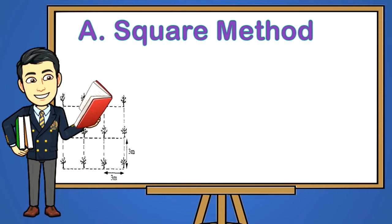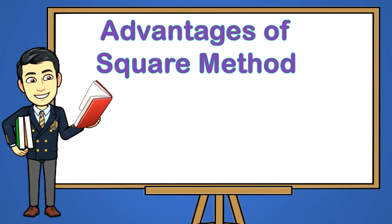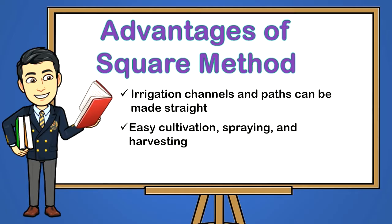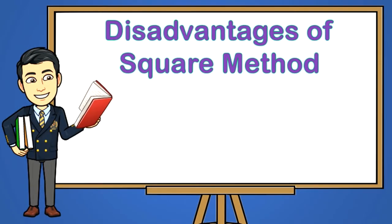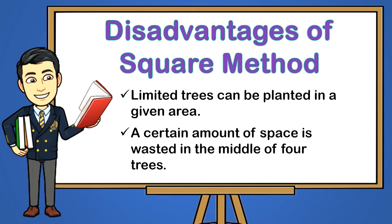A — Square Method. It is the simplest of all methods and is widely adopted. A plot is divided into squares and trees are planted at the four corners of the square in straight rows running at right angles. Advantages: one, irrigation channels and paths can be made straight; two, easy cultivation, spraying and harvesting; three, better supervision. Disadvantages: one, limited trees can be planted in a given area; two, a certain amount of space is wasted in the middle of four trees.